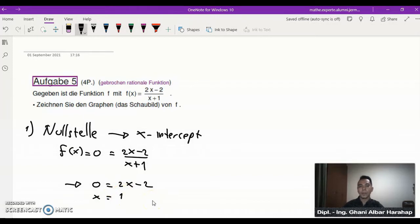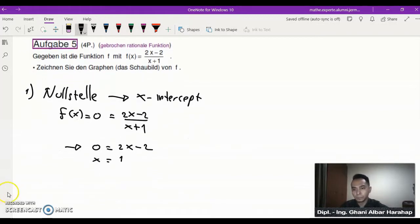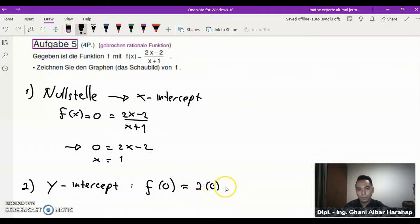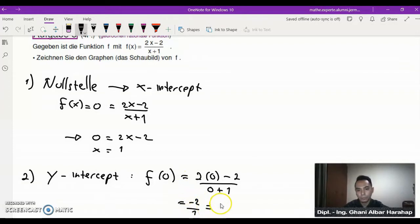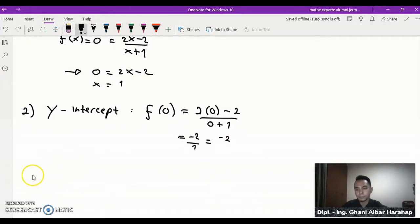So at x equal to 1, your graph will intercept the x-axis. Okay, is it clear? Number two: we want to find the y-intercept. It means you set your x to zero, so it's simply 2 times 0 minus 2 over 0 plus 1, and it's minus 2 over 1, it's minus 2. That's the second information.